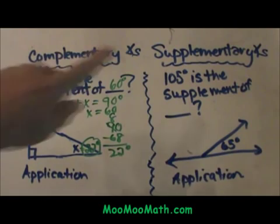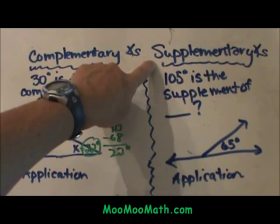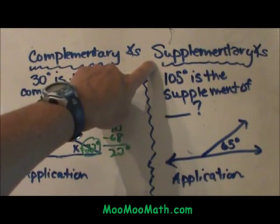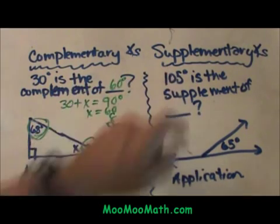Now let's look at supplementary angles. The definition of a supplementary angle or supplementary angles are two angles that add to 180. So it is very similar. Complementary is 90 and supplementary is 180.